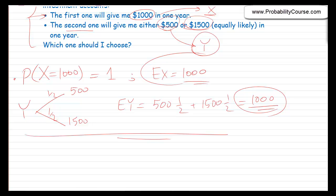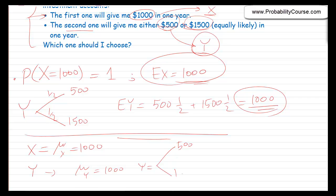The difference is that x is always equal to its expected value, mu of x, which is 1,000. However, y is always far from its expected value. The expected value of y is also 1,000, but y is either 500 or 1,500 — so y is far from its expected value.